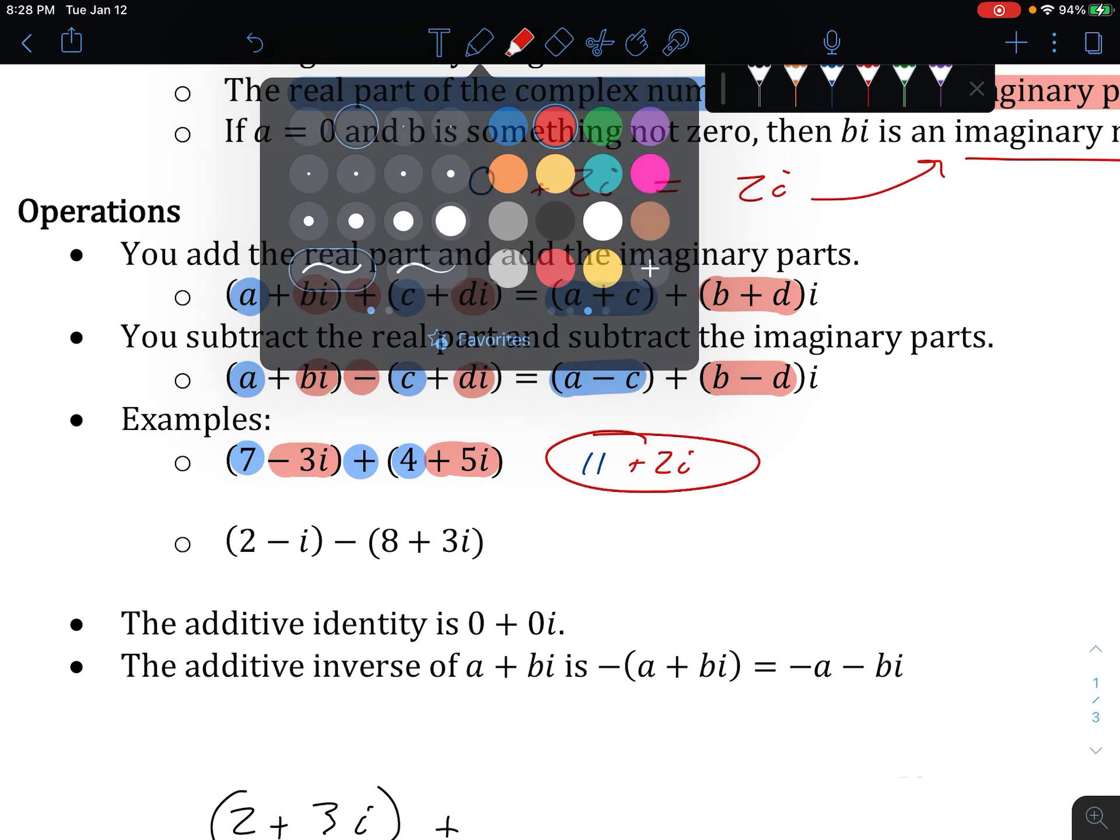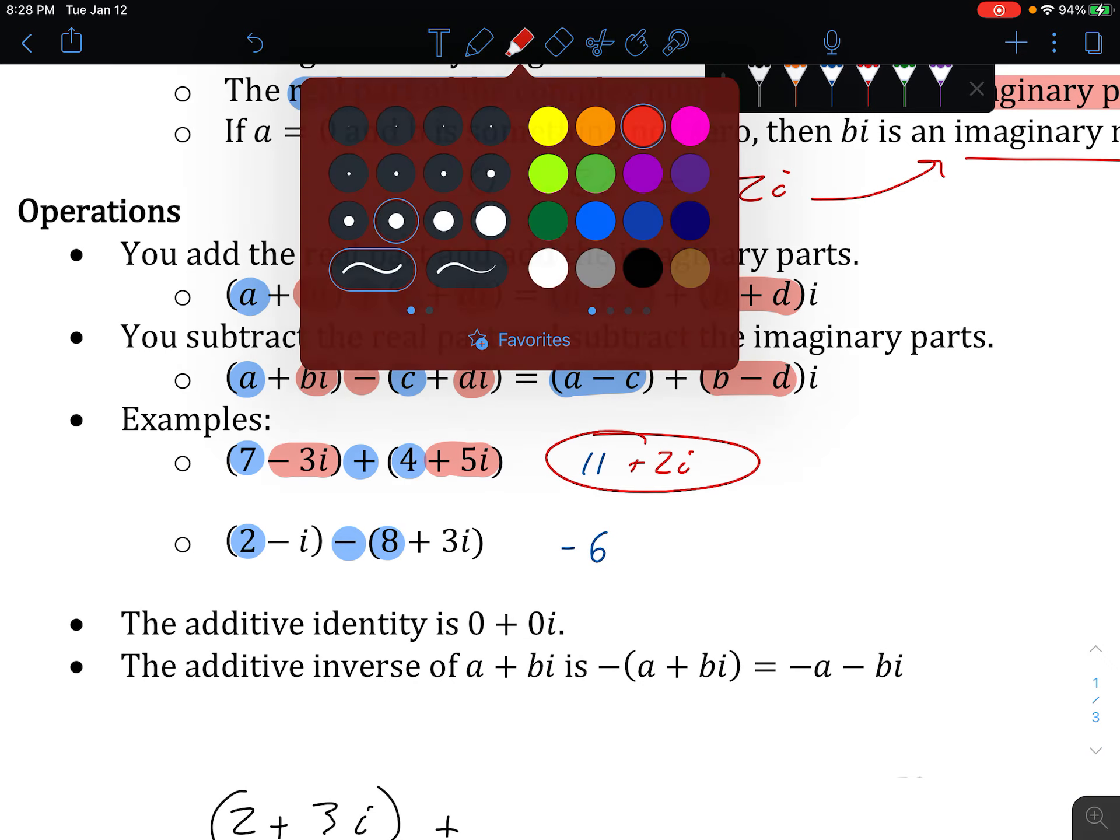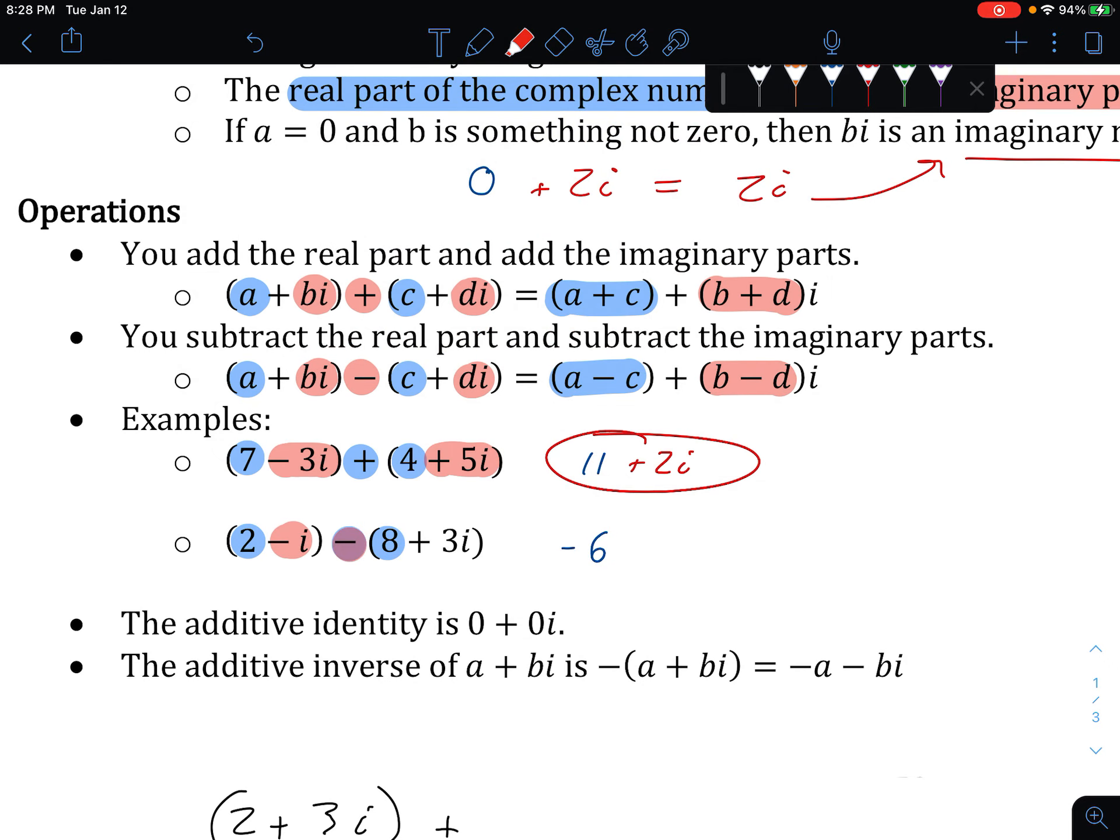If I do the same thing with subtraction, real minus real, 2 minus 8, well, that's a negative 6. Negative i minus positive 3i. So negative 1 minus positive 3. That's going to give me a positive 2i. And there's my complex number from there. So it's very simple. Real parts go together. Imaginary parts go together. They cannot mix.